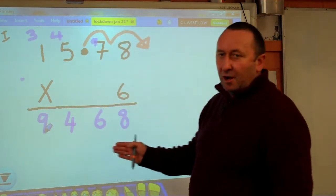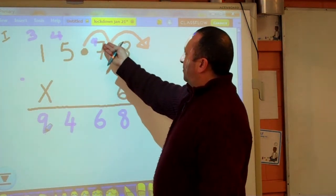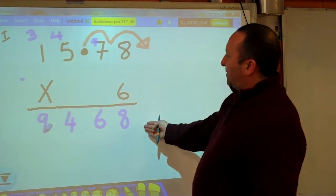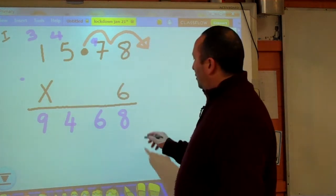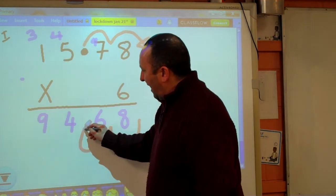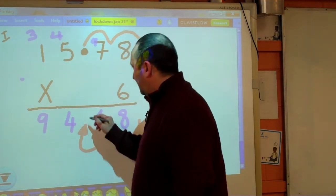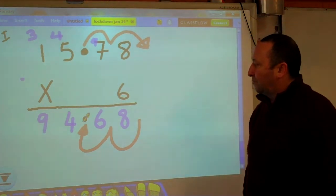Now, those are the numbers in my answer, but that is not my answer because at the very beginning I moved my decimal point two places to the right. So my decimal point is sitting out here. I must move it back in two places from here in order to get the proper answer, which means the decimal point is in there, and the answer to my sum is 94.68.